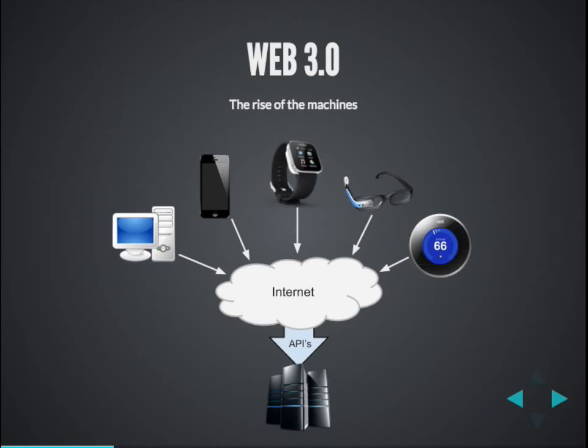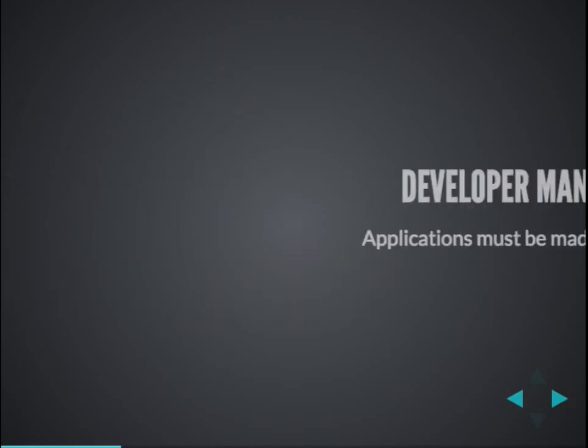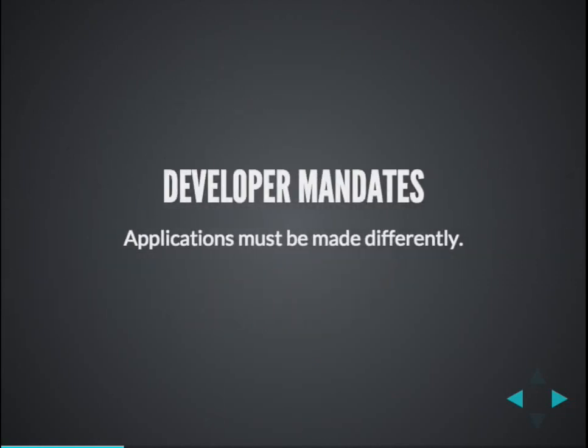We quickly realized we can no longer hand the interface to the device because every device is different. You can't hand the interface to an iWatch or a Nest thermostat — they provide their own interfaces. So now servers have to communicate to these devices via APIs. What's happening out of that is a lot of developer mandates occurring to build apps differently. Applications must be made differently; we can no longer build apps the way we used to back in the Web 2.0 days.